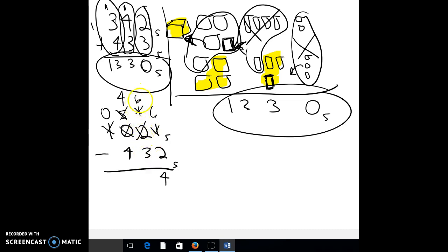Can I subtract now? Yes. So 6 minus 3 is 3. 4 minus 4 is 0. And my answer is in base 5, so it'd be 34.